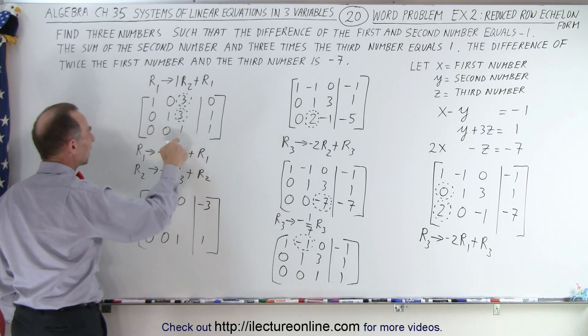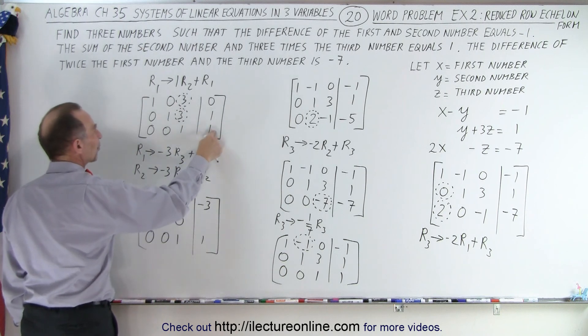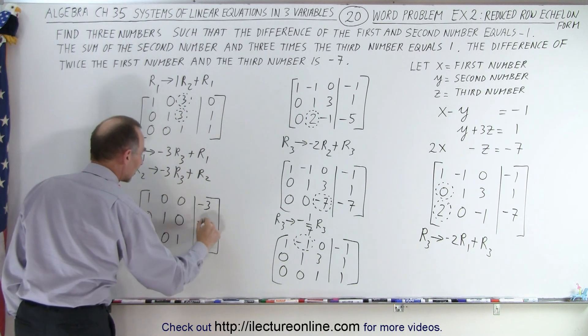For the second row, we take negative three times one, that's negative three added to three, gives me zero. And negative three times one is negative three added to one, gives me a negative two.